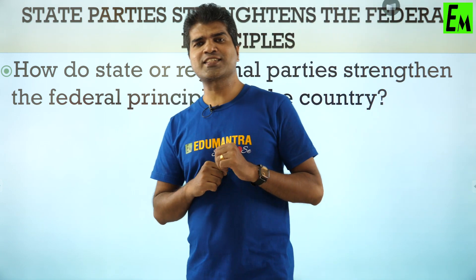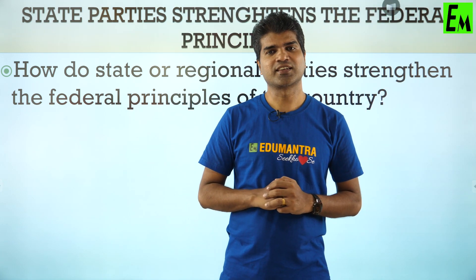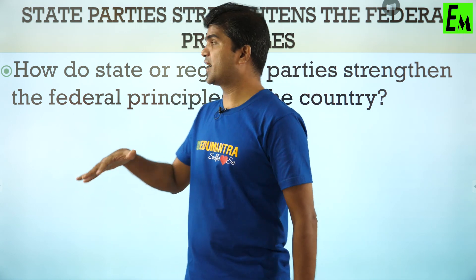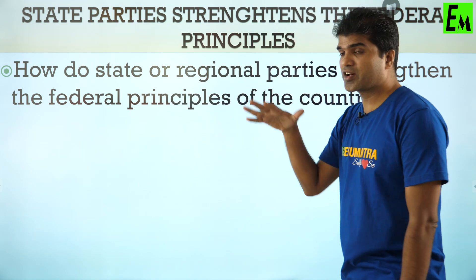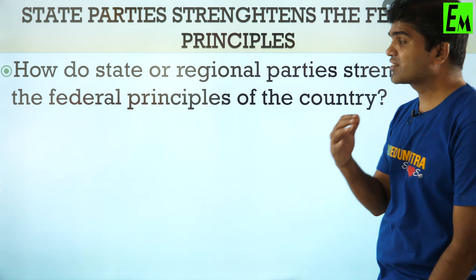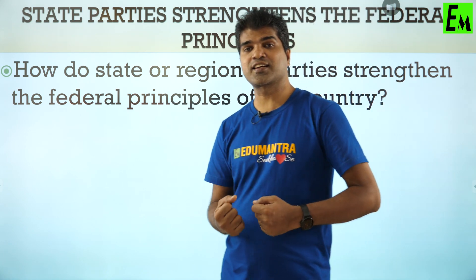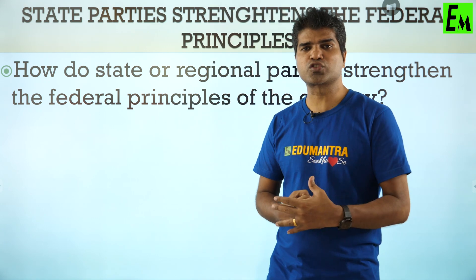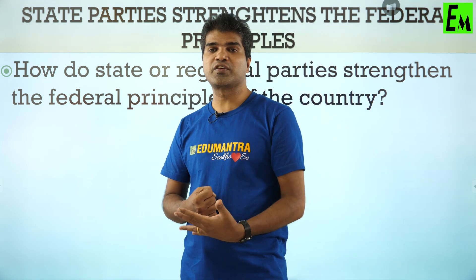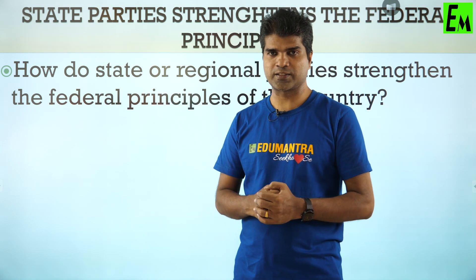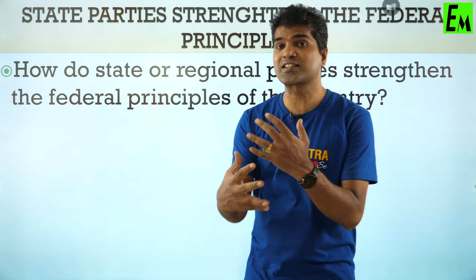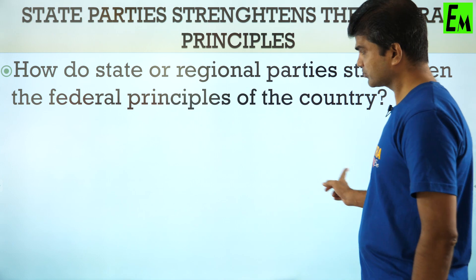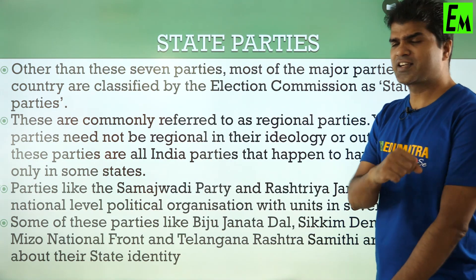We have already discussed in the second chapter that we follow a federal form of government. The question is how state or regional parties strengthen the federal principle. We have discussed federalism, the federal form of government, its roots, and its key features. Now the question is: who is strengthening it — the state party or regional political party? We will have a detailed discussion on this.